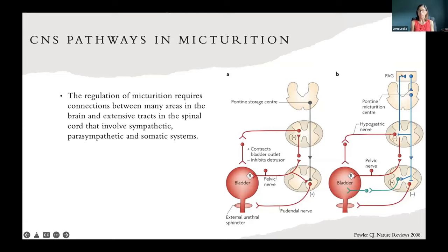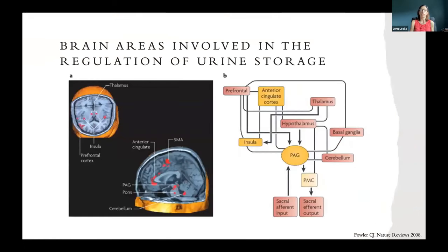The PAG takes in information from a range of higher structures. The PMC is located adjacent to the locus coeruleus and is thought to project spinal fibers to activate the sacral bladder preganglionic nucleus and sacral urethral motor nucleus, important in triggering micturition. The hypothalamus and the prefrontal cortex are important in voiding function, while the hypothalamus, cerebellum, basal ganglia, and frontal cortex are important in storage function.